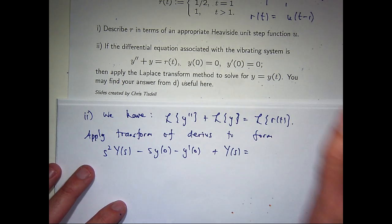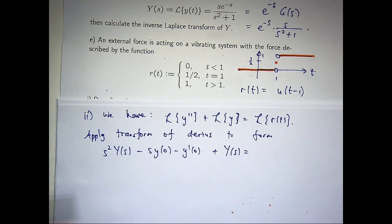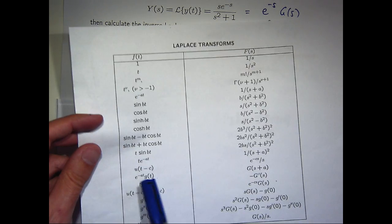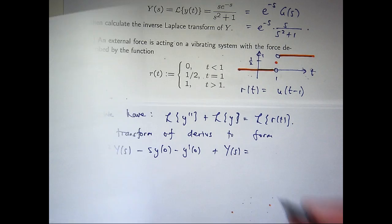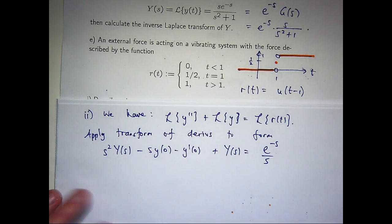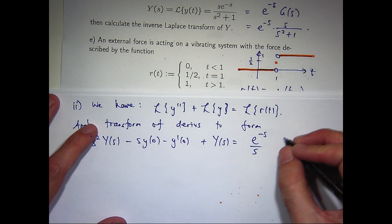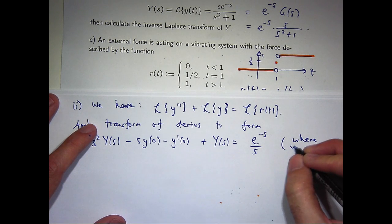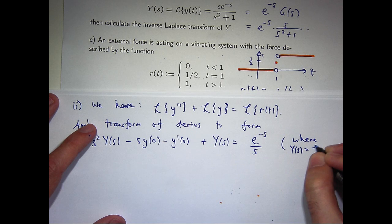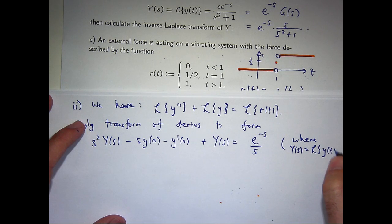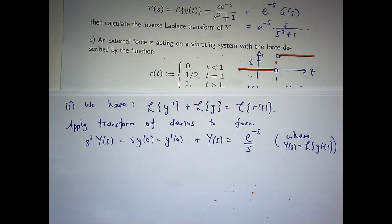So this is the Laplace transform of my Heaviside step function, which is from our table, here, and in our case, c will be 1. So it'll be e to the minus s over s. Now, notice I've slightly changed the notation here. Big Y of s really incorporates the fact that we're dealing with functions of s here.